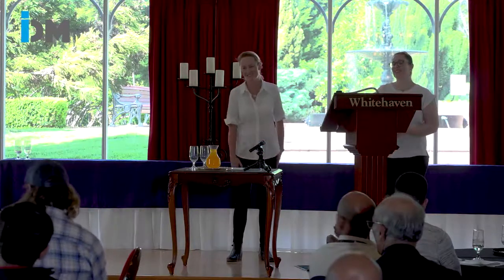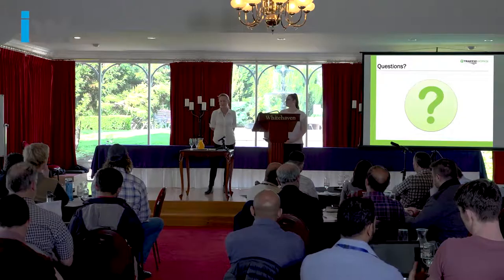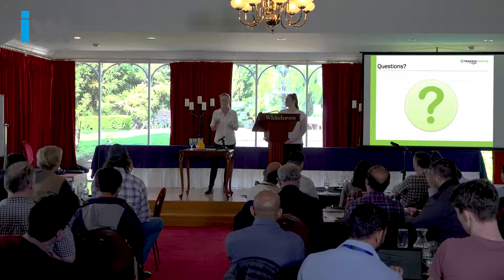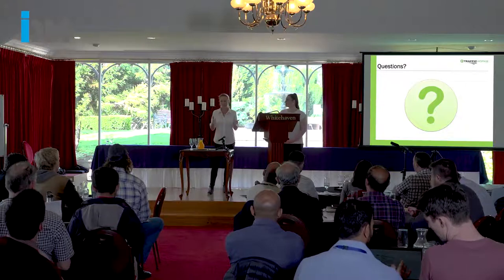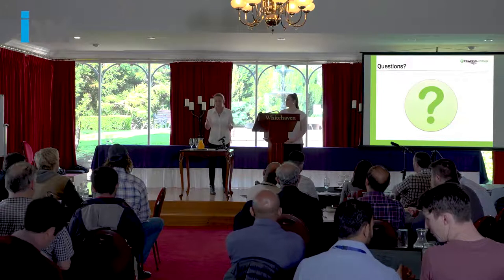Q&A on sight distances - why are sight distances less for driveways than intersections? It's a risk and volume issue. At an intersection you expect more vehicles on the side road or minor road. At a driveway, someone exiting is probably more cautious, and there are fewer vehicles. Also, expecting 285 metres of sight distance from a driveway would be unrealistic in many situations.